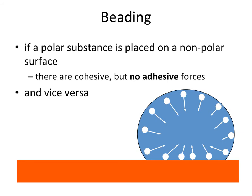Beading is something we see especially on a freshly waxed car — surfaces that have discrepancies between water's polarity and the nonpolar features of substances applied to windshields or car surfaces. If you take a polar substance and place it onto a nonpolar surface, the cohesive forces of that polar molecule are very strong, and there will be no competition because polar and nonpolar molecules don't want to interact. There are no adhesive forces in this context, so we form beads or droplets of water on the surface of a rain-treated windshield or freshly waxed vehicle.